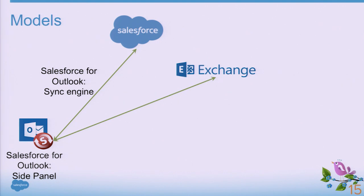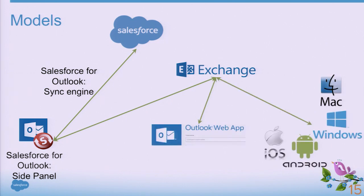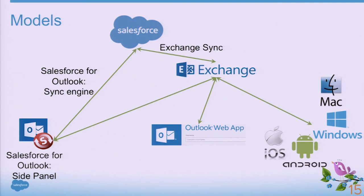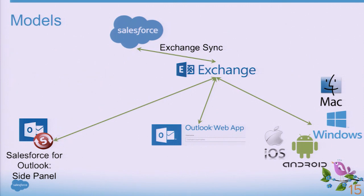Outlook connects to the Exchange server where email, contact, and calendar information are stored. The Exchange server caters to other clients — such as Outlook Web App from Office 365, your mobile devices, and other email applications on Windows or Mac. When you're looking at your corporate calendar on your iPhone, you're connecting to the Exchange server. We have Exchange Sync capabilities that will connect Salesforce directly with the Exchange server, so you won't need the Salesforce for Outlook synchronization engine anymore, and more devices become connected.